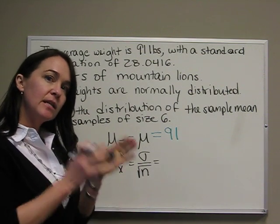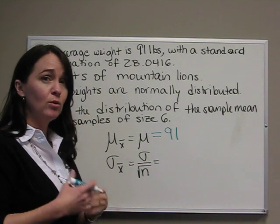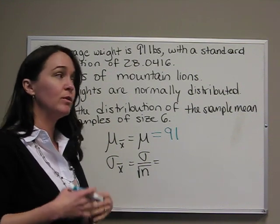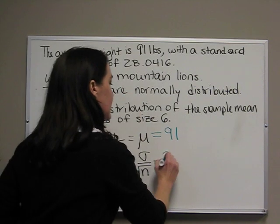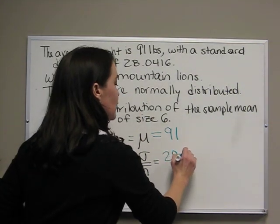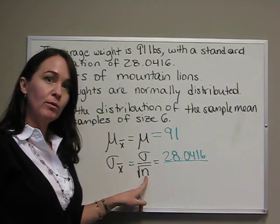You need to take this step by step and round each number to four decimals in order to get the same number as what you're expected to know on your homework. So if we look at sigma, we know that that is 28.0416.